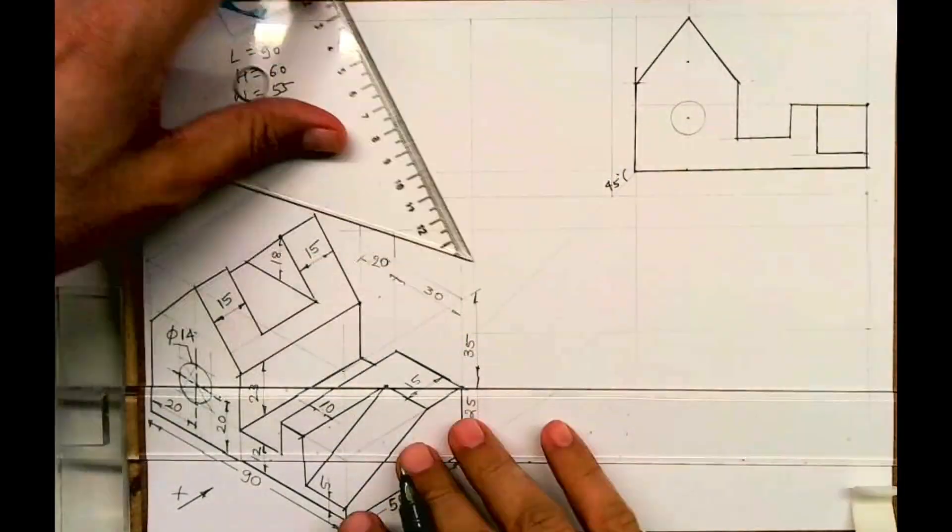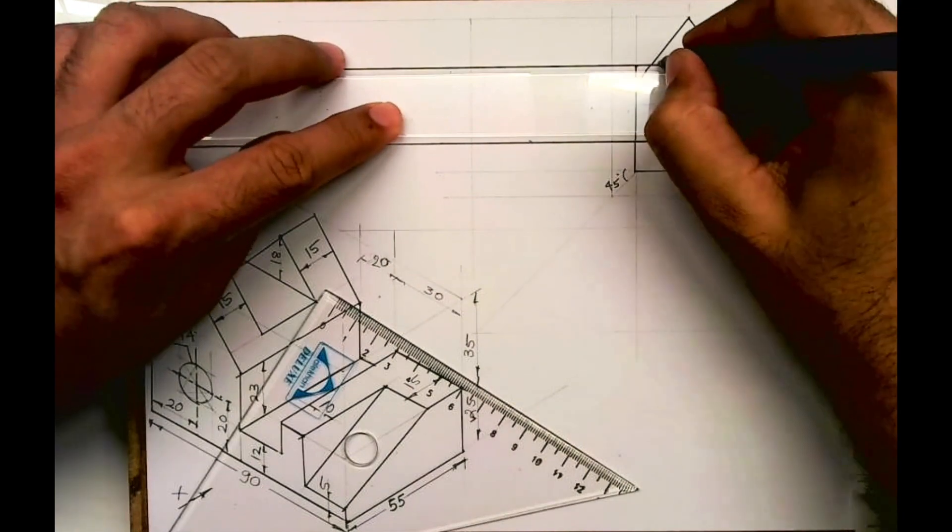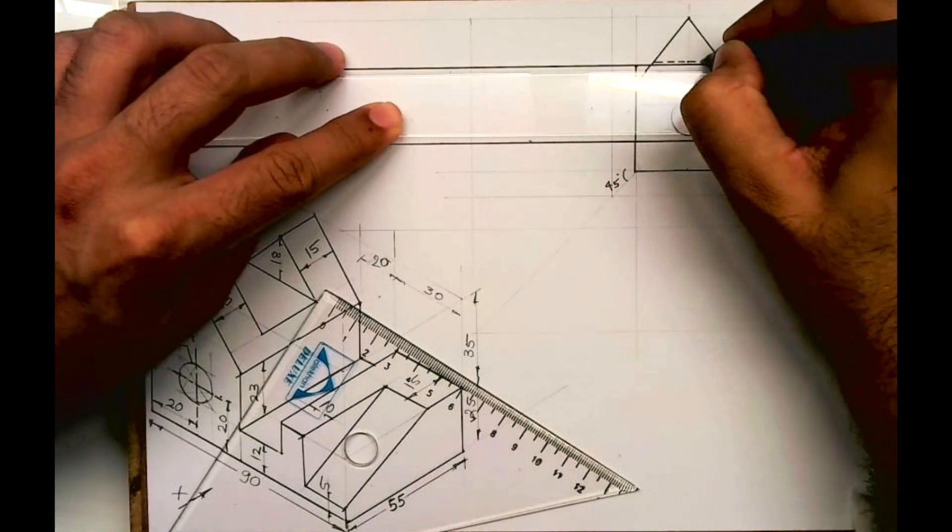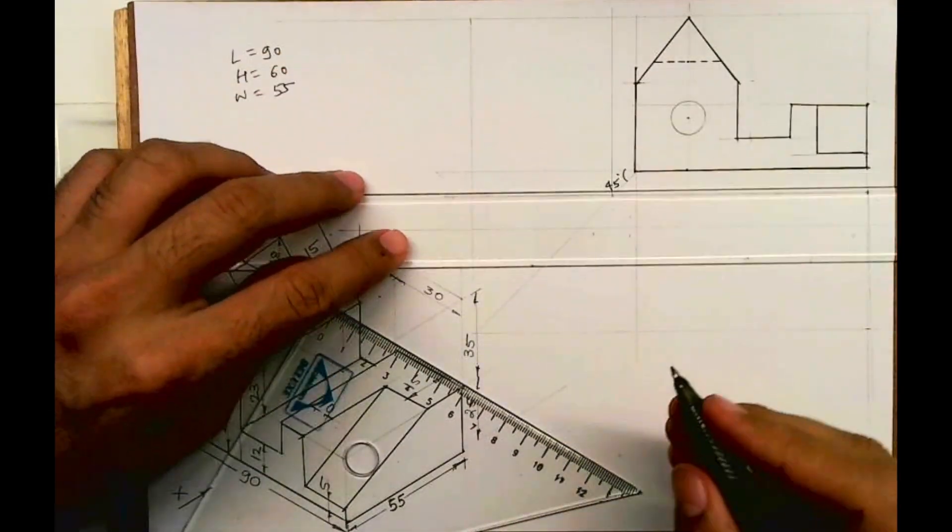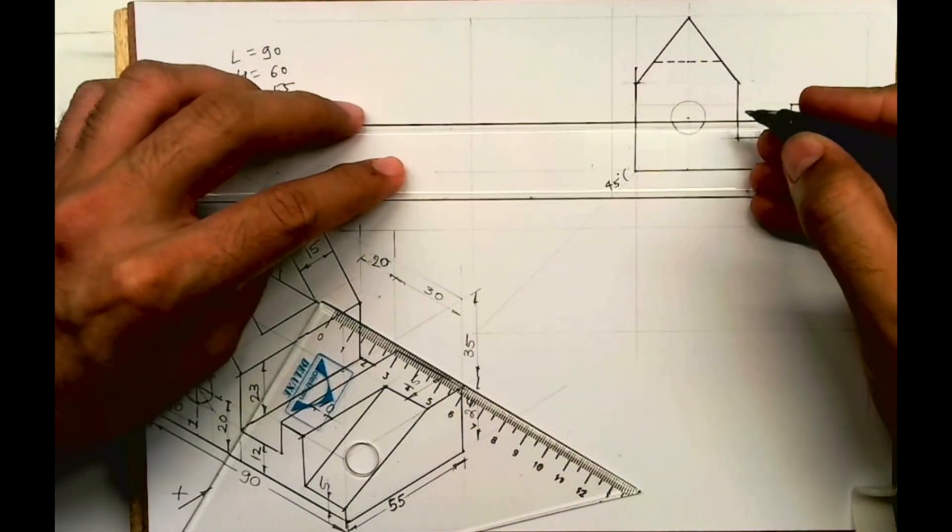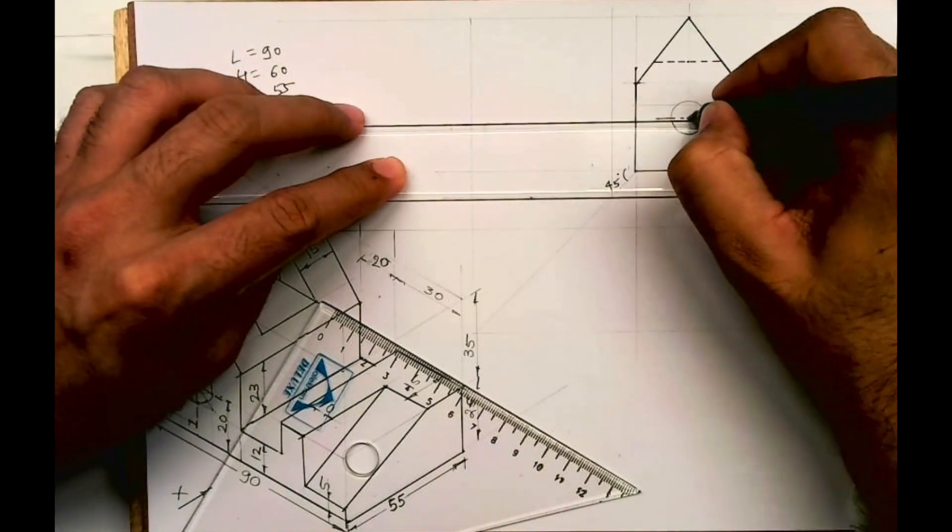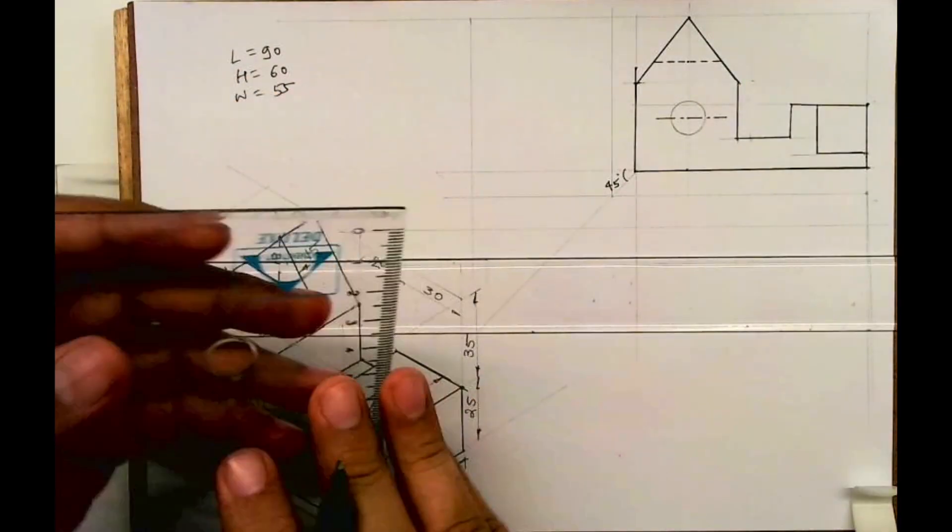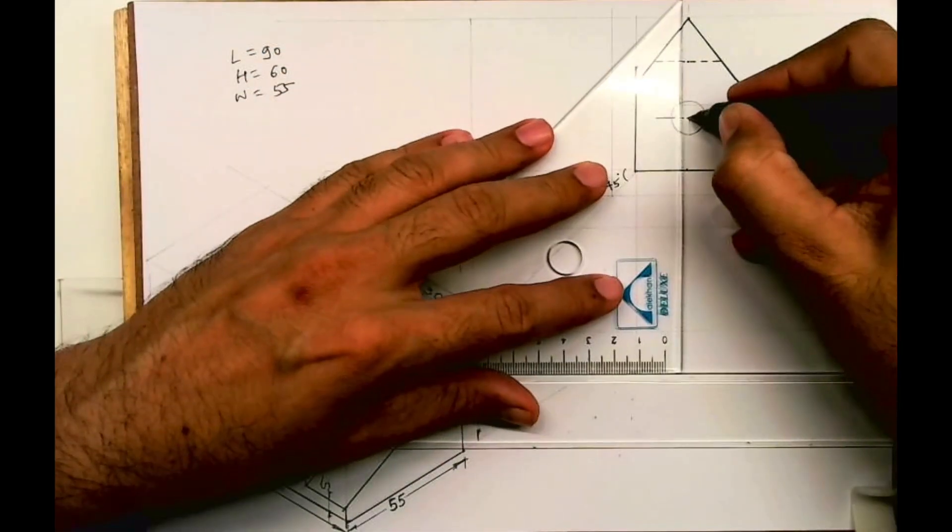From here you go down by 18 and draw dotted line because you can't see that shape in front view. I'm drawing axis for the circle. So we are done with front view.